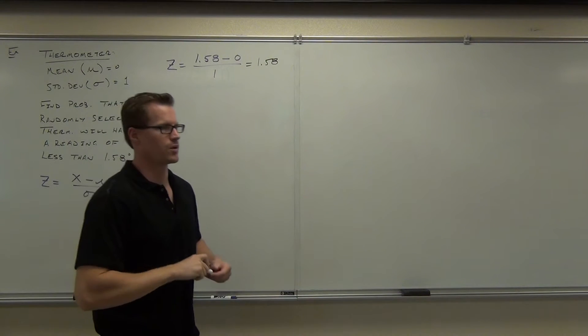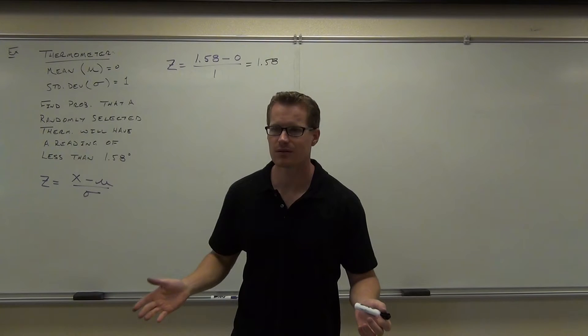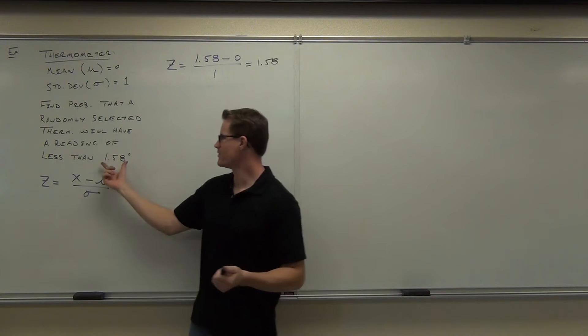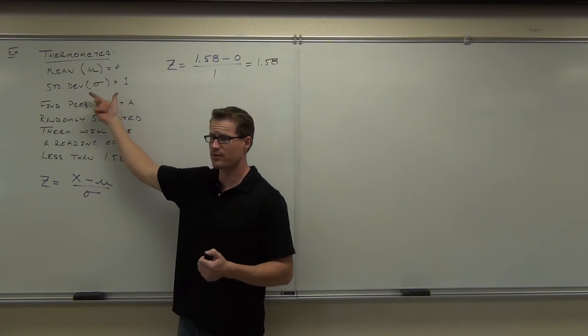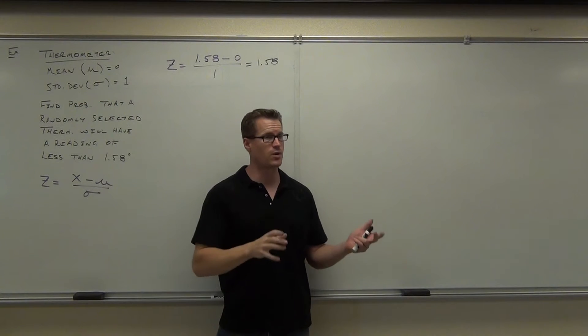Now, here's the important part. Everybody in here is going to be able to find a z-score. That's not a hard thing. You just take your value, subtract whatever mean I give you, divide by whatever standard deviation I give you, and you get a number out of that.